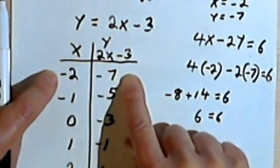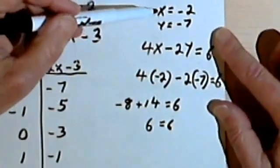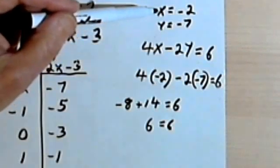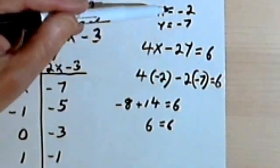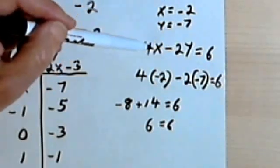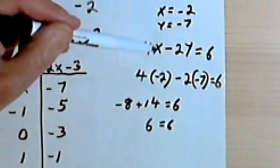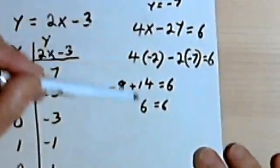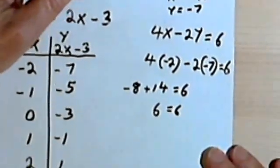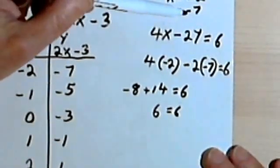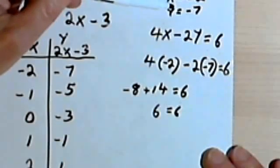We can check that it's a solution, as we did over here. In other words, checking that x equals negative 2 and y equals negative 7 is a solution to the problem, or satisfies the equation. We plugged those numbers in, we found out that the equation balanced, and so we could say that these two numbers, x equals negative 2 and y equals negative 7, satisfied the equation.